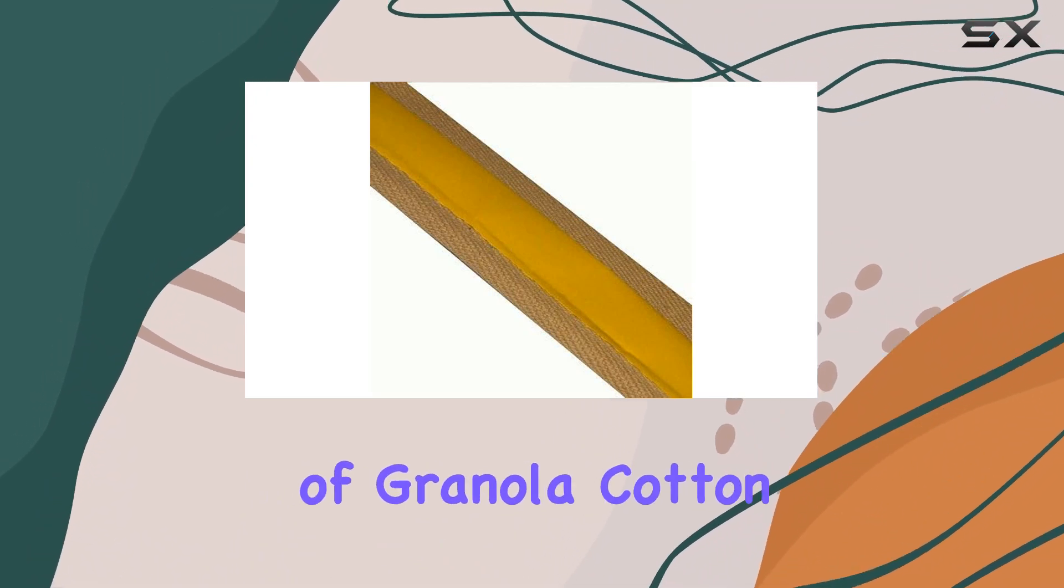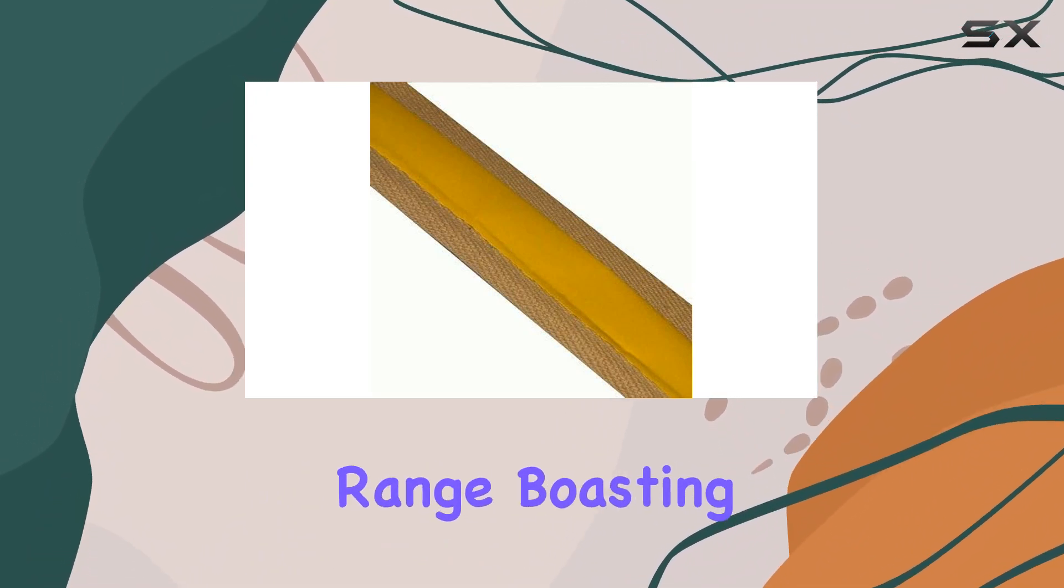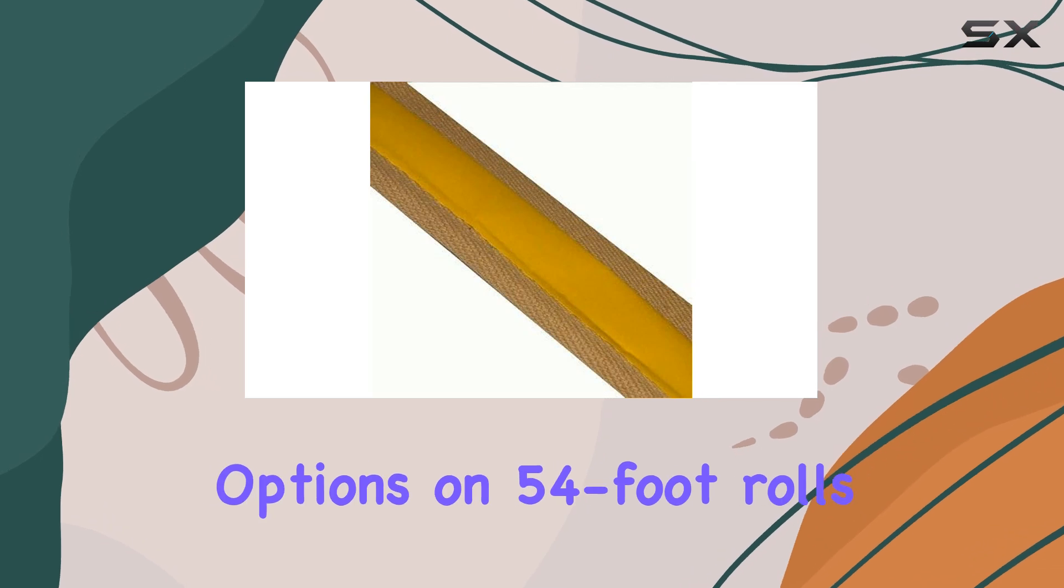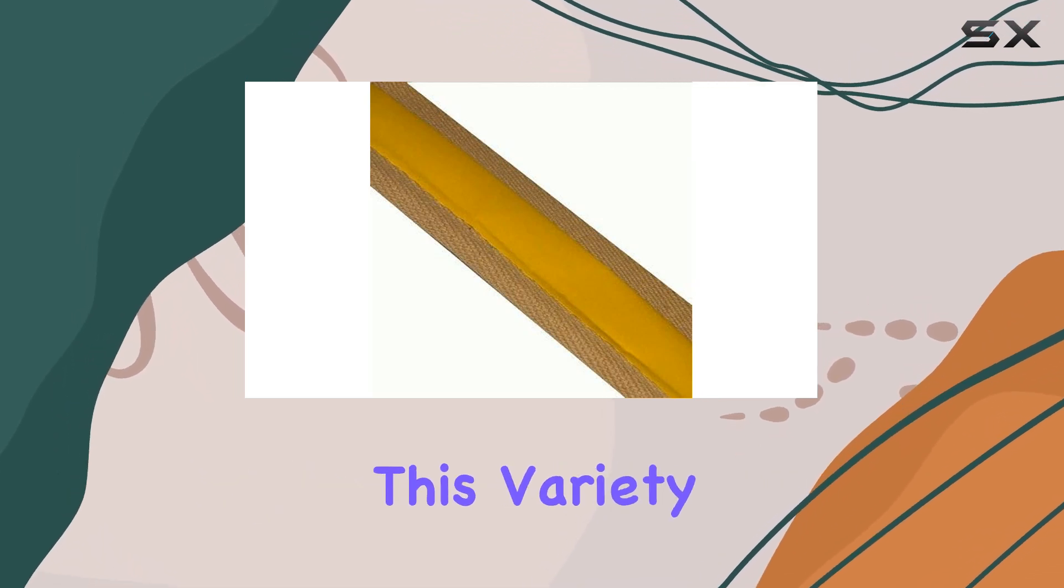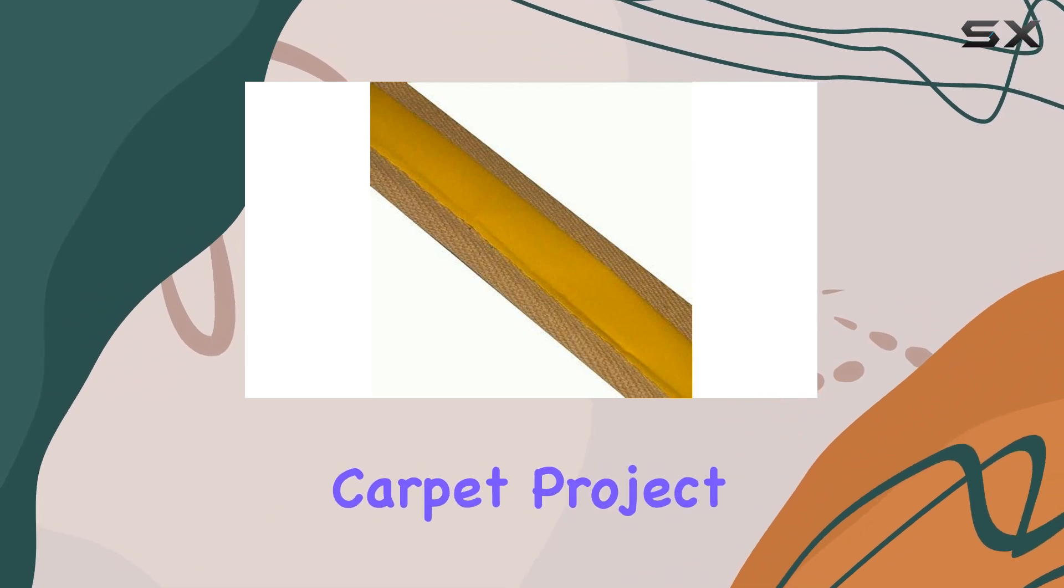One of the standout features of Granola Cotton Binding is its extensive color range, boasting 30 different options on 54-foot rolls. This variety ensures that you can find the perfect match for your carpet project.